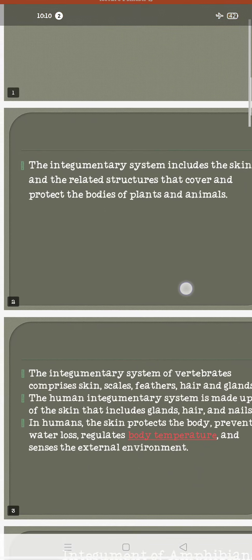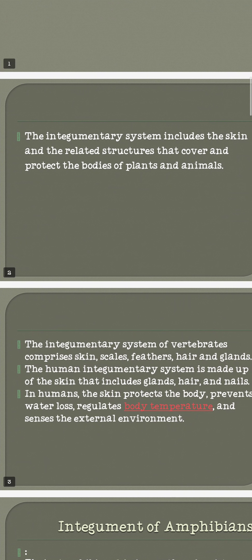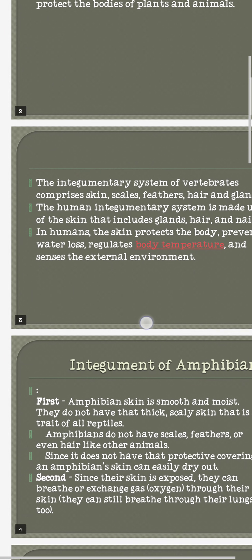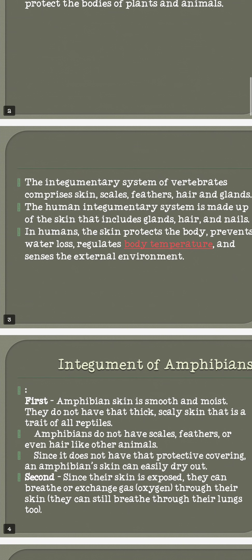The skin and all related structures protect our body from any living organism. We are concerned with animals. The integumentary system of vertebrates comprises the skin, scales, feathers, hair, and glands. These are the outer coverings of the body.